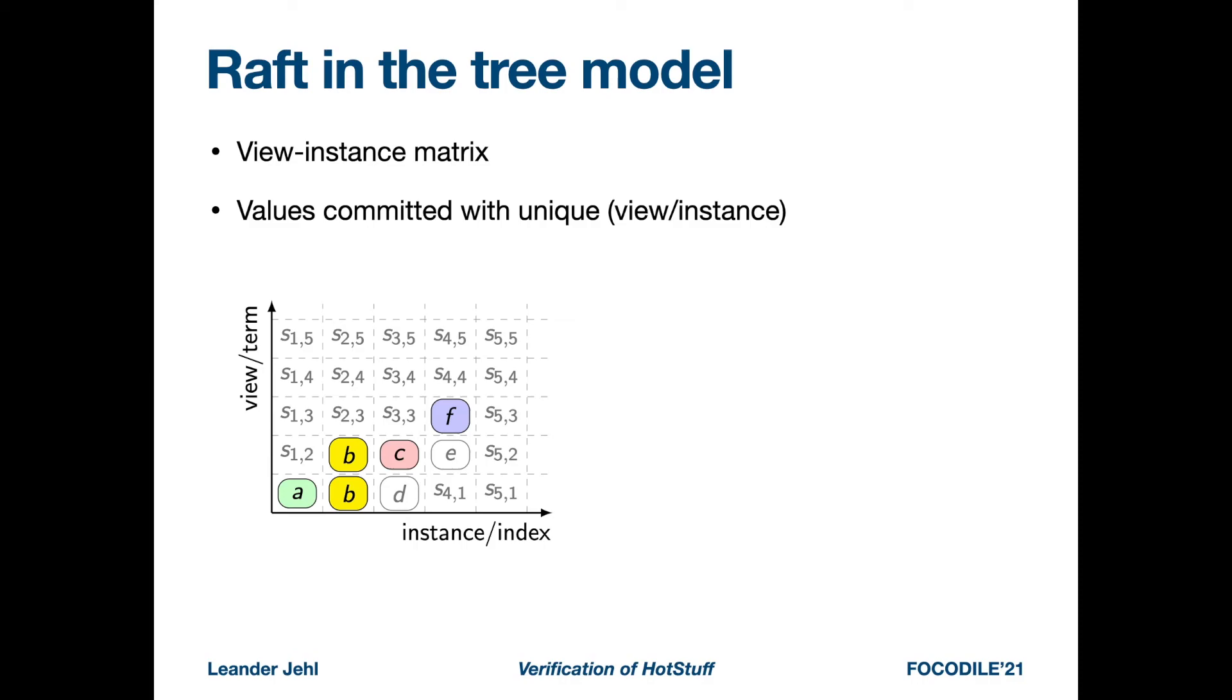Different from algorithms like Paxos, Raft commits values with a unique slot, so with a unique tuple of view and instance. In the figure here, you see that value B is committed both in slot 2.1 and 2.2. Such behavior is possible in algorithms like Paxos, but not possible in Raft.